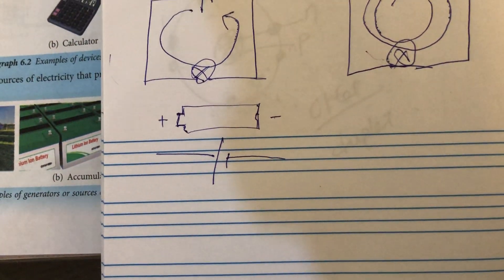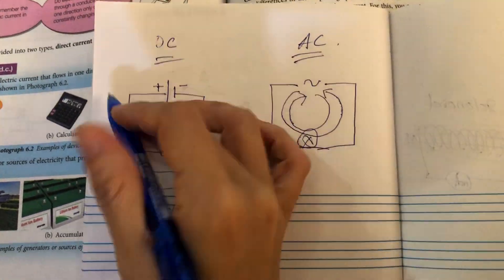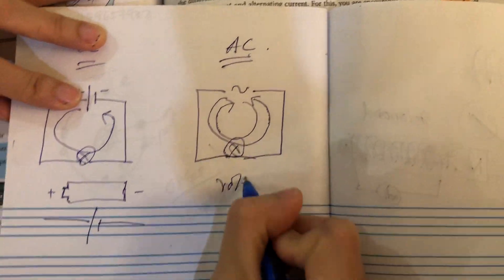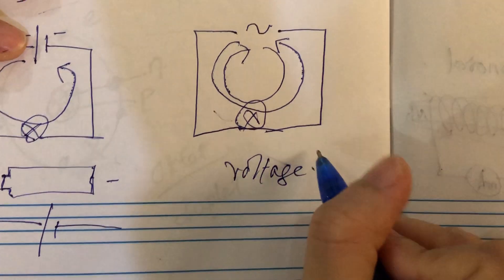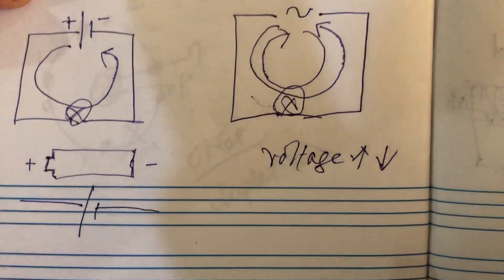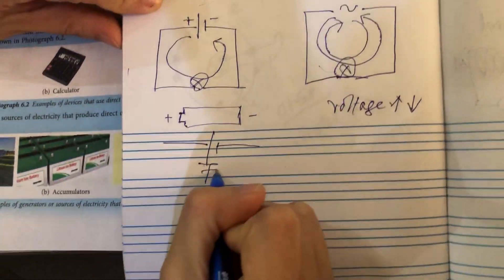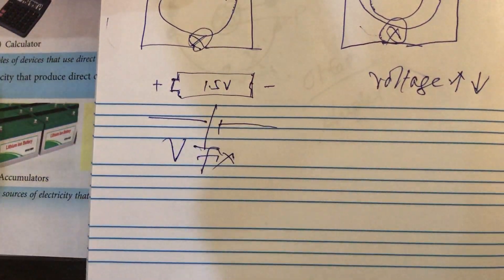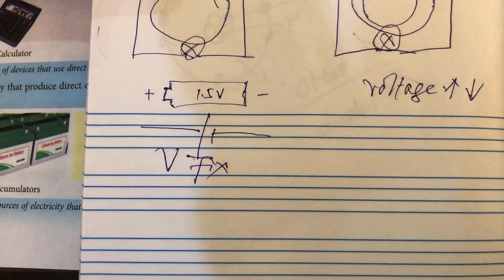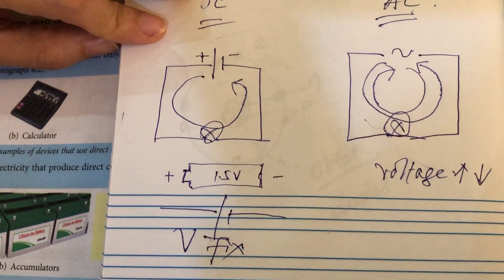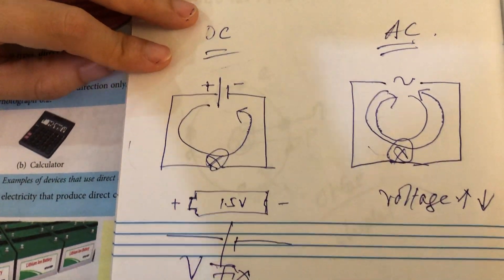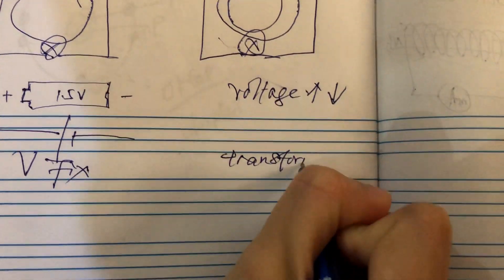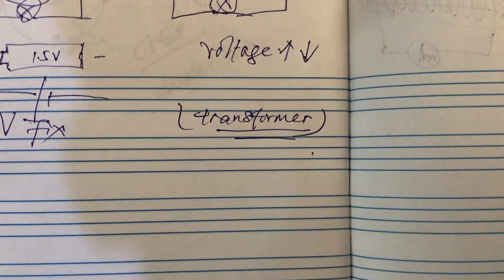Alternating current is much better compared to direct current because for alternating current, you can change the voltage — it can be stepped up or stepped down. But the voltage of direct current is fixed. For example, a 1.5 volt battery gives 1.5 volts the whole time; you won't get higher or lower voltage. But with alternating current, you can adjust the voltage by using a transformer, which we will learn at the end of this chapter.